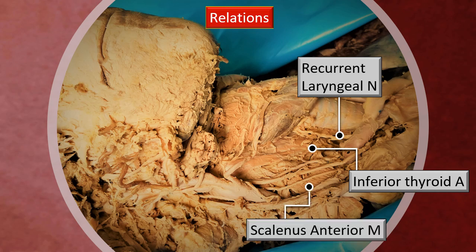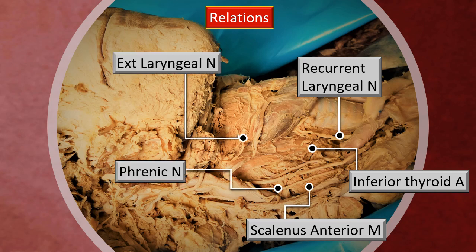Also notice that behind all this is the scalenus anterior muscle, and particularly running on top of it is the phrenic nerve. The external laryngeal nerve is also seen in the upper part of this view.